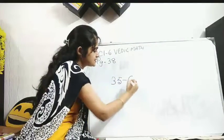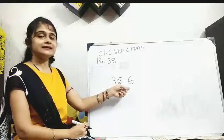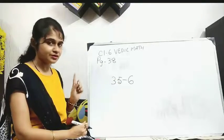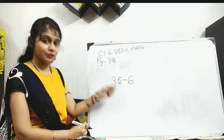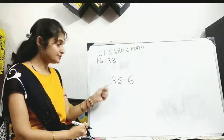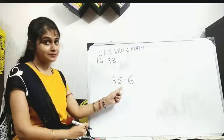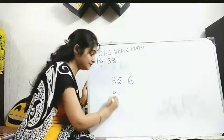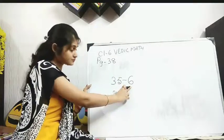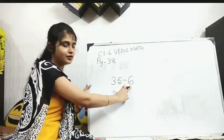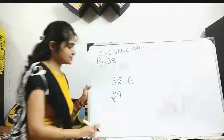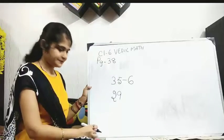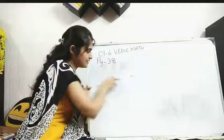35 minus 6. So again single digit, just visualize 0. Then 3 is greater this side, and this side lower part 6 is greater. So match mismatch. When second part is mismatch, 3 will become 2. 6 complement is 4. So 4 plus 5 becomes 9. Your answer is 29. Clear? Next. Last one.